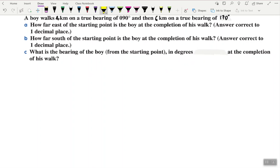He walks four kilometers on a true bearing of 90 degrees. Let's start that step at a time. With true bearing, always start from north. We know 90 degrees is east, 180 degrees would be south, 270 and 360. So we know he's going at a true bearing of 90 degrees that way. This boy has walked four kilometers.